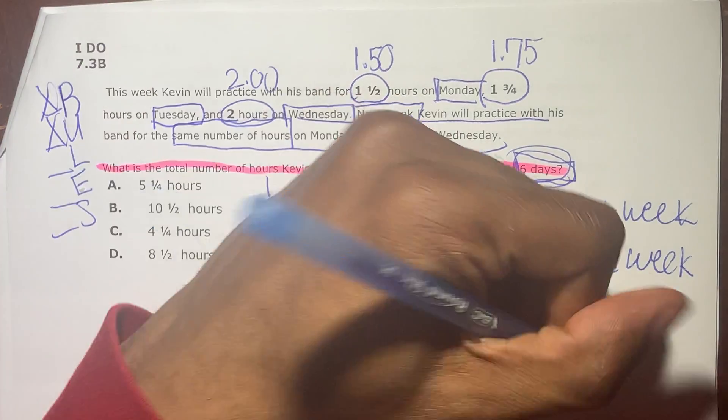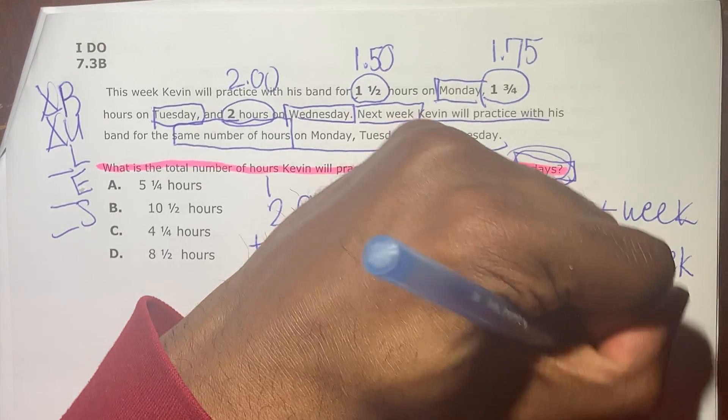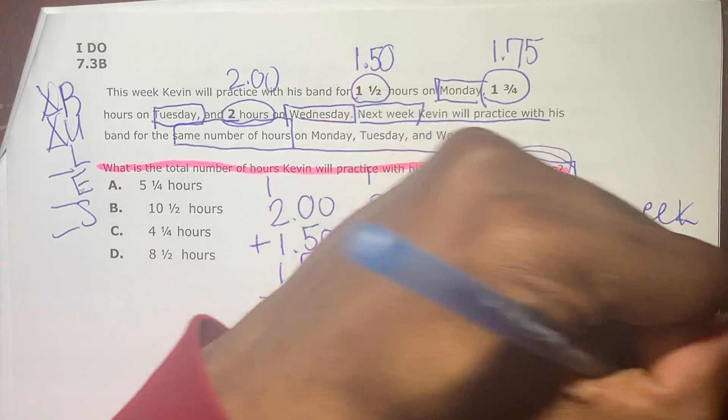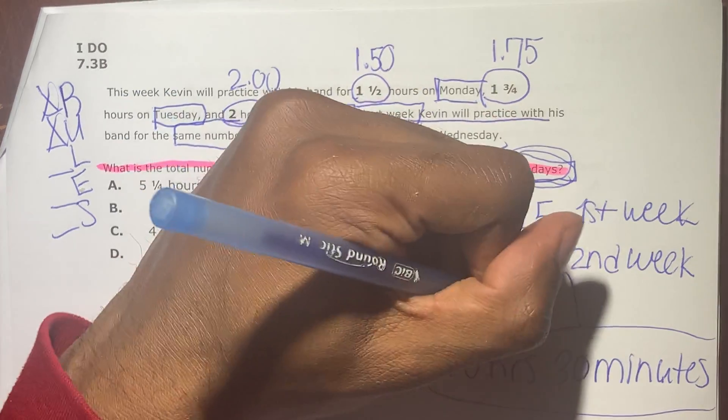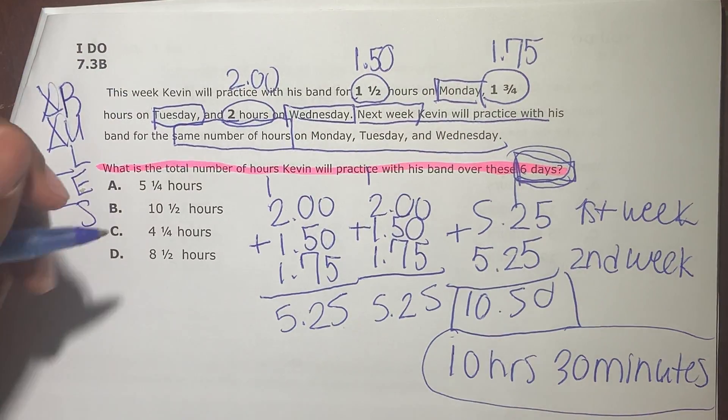It'll be 30 minutes. 10 hours and 30 minutes. Okay? Because half of an hour, or 0.5 an hour, is 30 minutes.